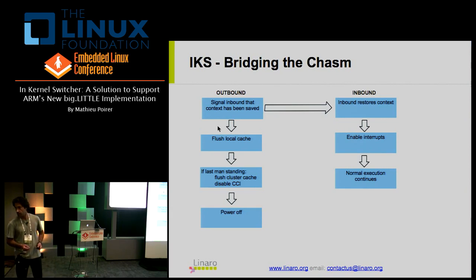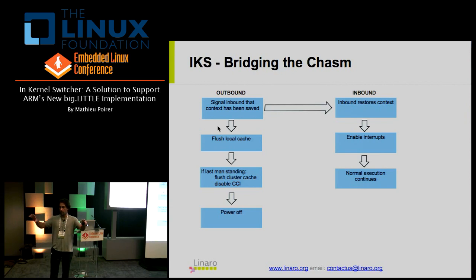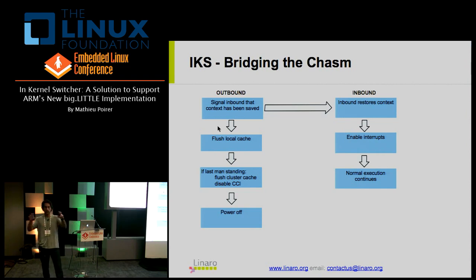The 'last man standing' logic operates per cluster. If you have a cluster of four cores, whether big or little, and it's the last CPU in that cluster being switched off, you disable snooping for that interface and disable the entire cluster, because both consume power. The caches and both clusters run at the same clock rate for snooping purposes.